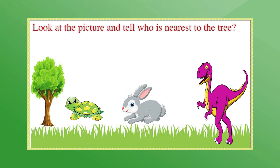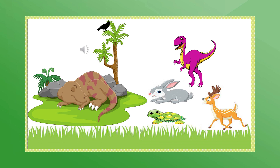Now let's go back to the story. Can you tell which animal is nearest to the tree? Is it the dinosaur, the rabbit, or the tortoise? Let us see — the tortoise is nearest to the tree. Do you know why we use the word 'nearest' instead of 'near'? We use 'nearest' when we compare the position of more than two objects or animals. We will not say the tortoise is near; we will say the tortoise is nearest to the tree of all animals.